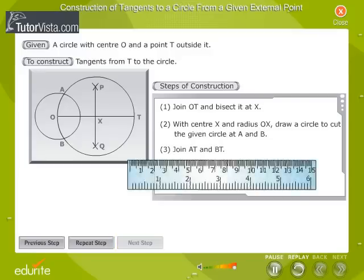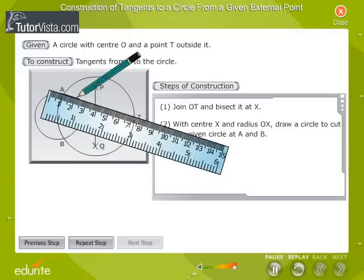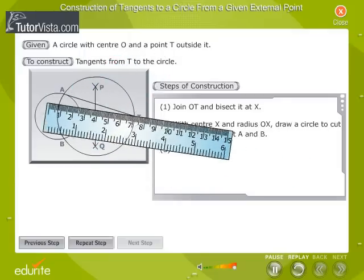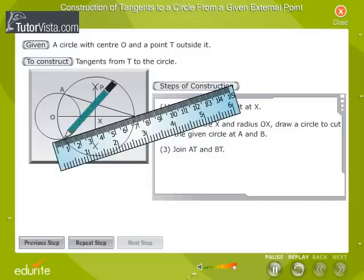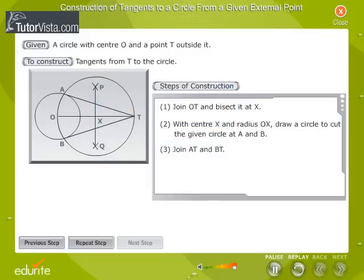Join AT and BT. AT and BT are the required tangents. OAT and OBT form right-angled triangles.